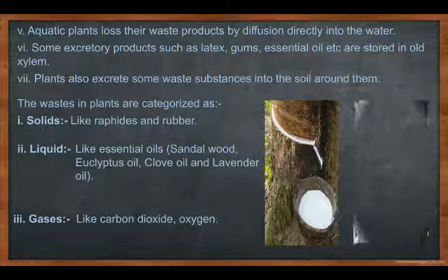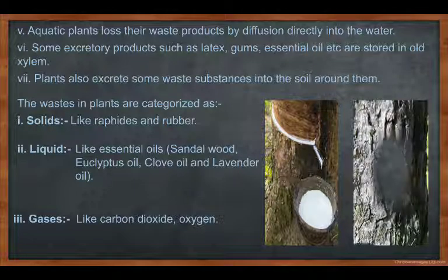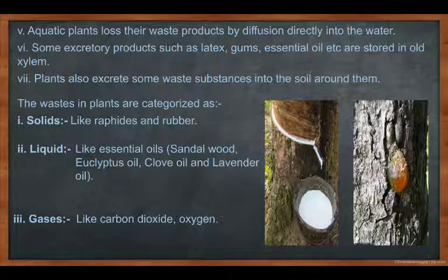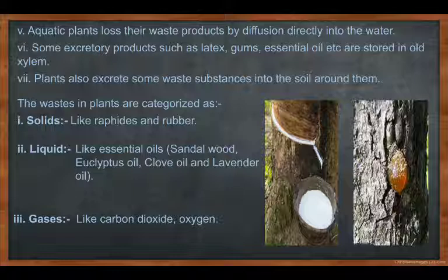This is the diagram showing how plants excrete waste products like rubber. Latex — when we cut the stem of a mango tree, some gum or latex comes outside. That is basically called latex or gum.